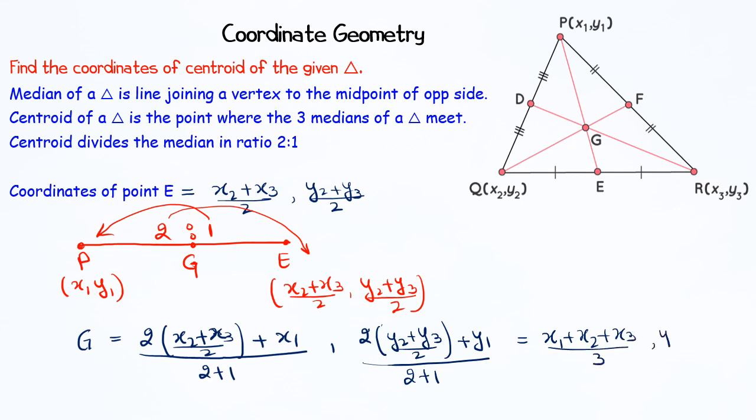So these are the coordinates of the centroid of a triangle with given coordinates of its vertices: ((x₁ + x₂ + x₃)/3, (y₁ + y₂ + y₃)/3).